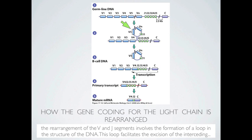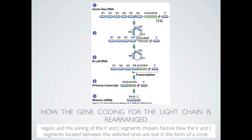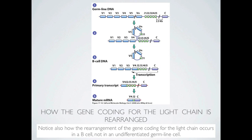The rearrangement of the V and J segments involves the formation of a loop in the DNA structure. This loop facilitates the excision of the intervening region and the joining of the selected V and J segments. The V and J segments located between the selected ones are lost in the form of a circle. This rearrangement of the gene coding for the light chain occurs in B cells, not in undifferentiated germline cells.